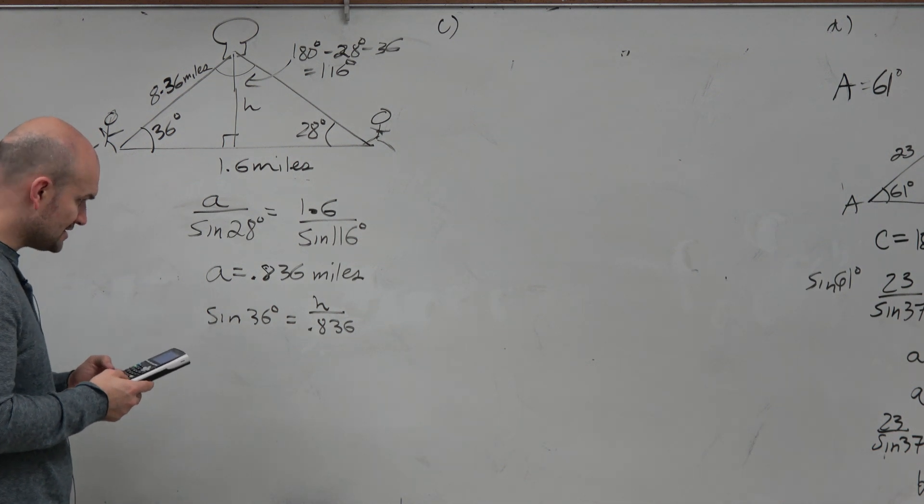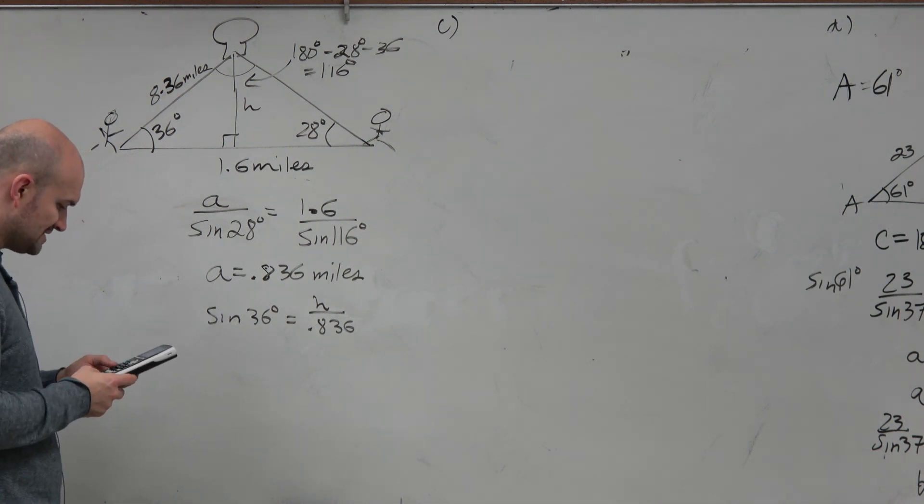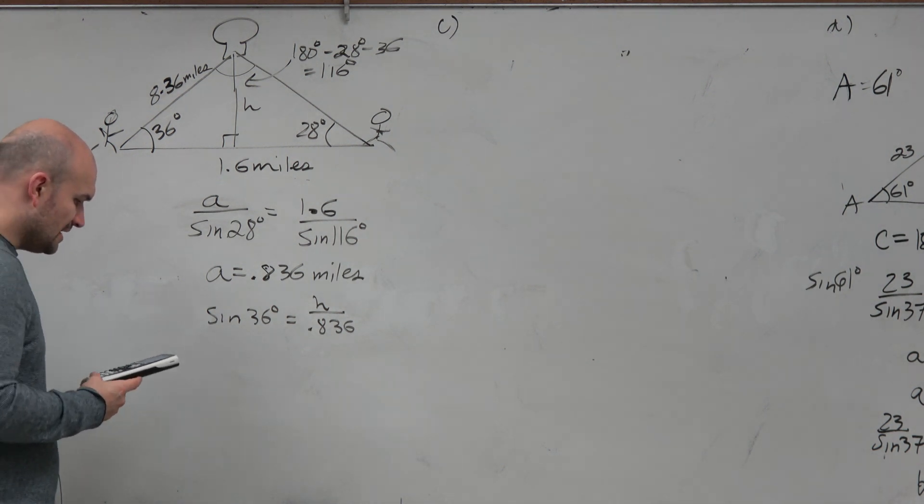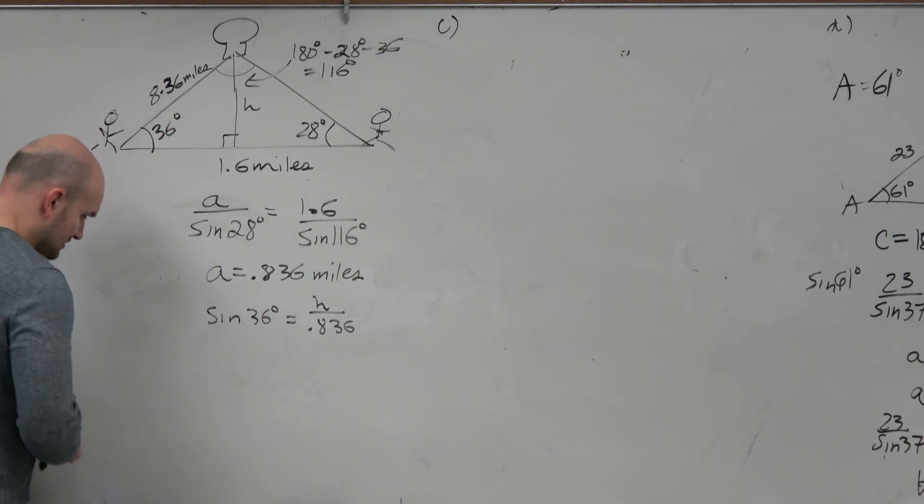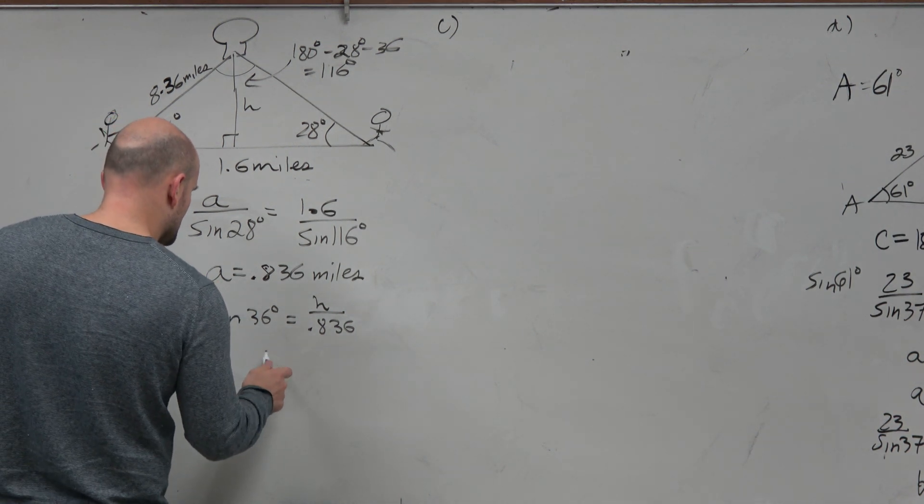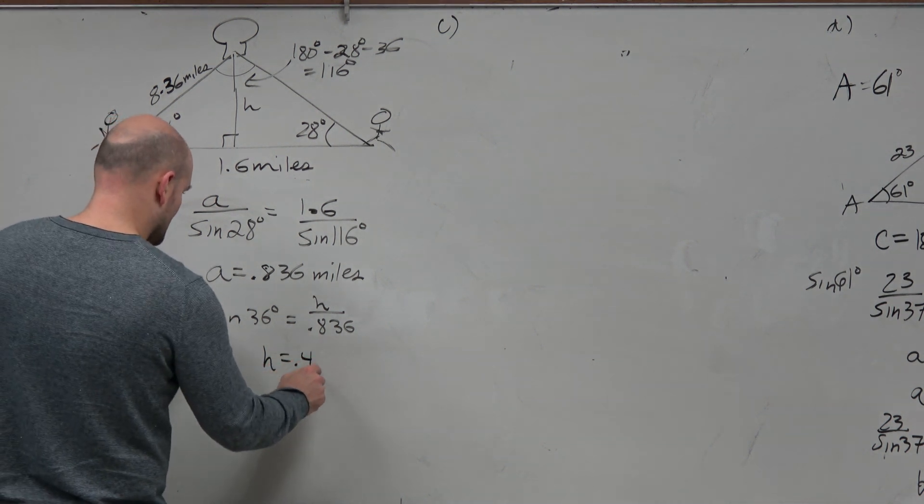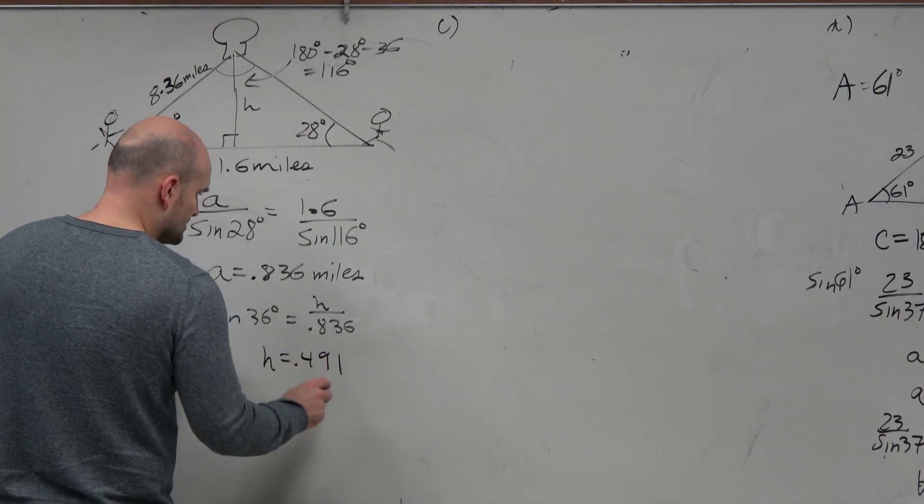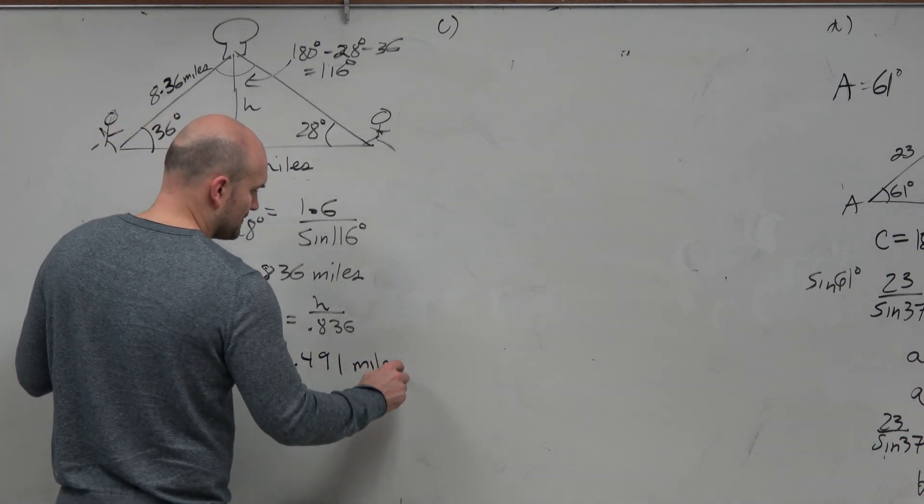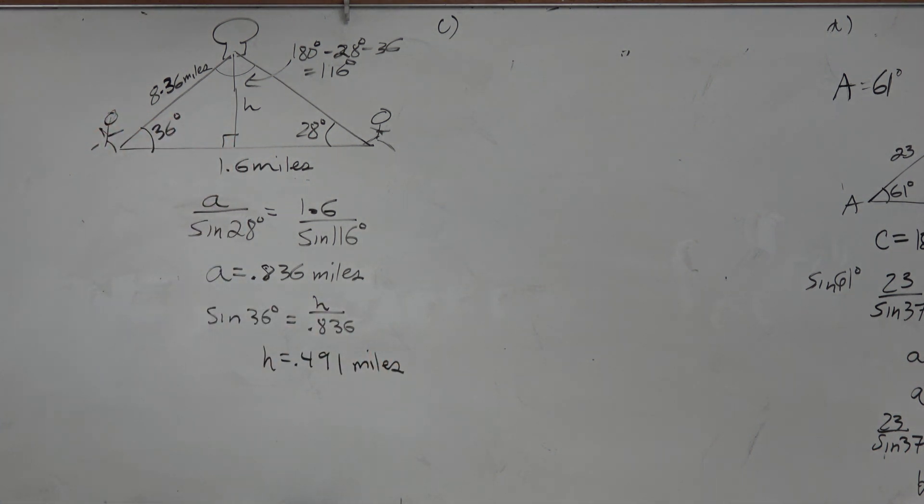So what I'm going to do is take this answer, second answer, and then times it by the sine of 36. And that's going to give me 0.49. So I'll say h is equal to 0.49 miles.